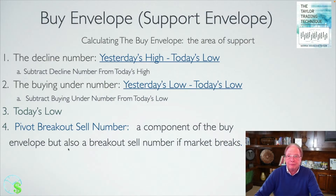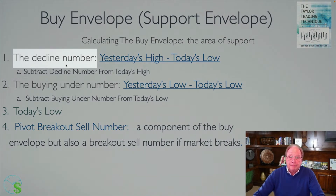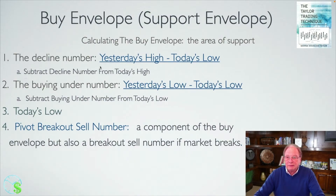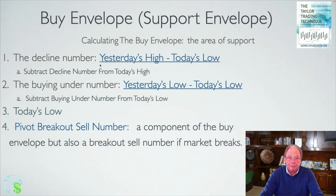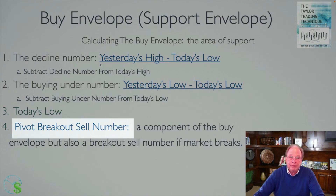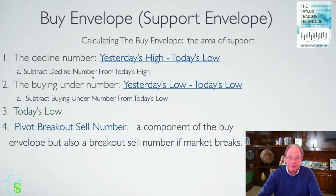So let's go into the buy envelope — the support envelope first. There are four numbers that comprise the buy envelope, where support is for the following day. The decline number is the first number in the buy envelope, and it's the difference between yesterday's high and today's low. We calculate this number and then subtract the decline number from today's high. Next is the buying under number, which is the difference between yesterday's low and today's low, and then we subtract that buying under number from today's low. The third number that goes into the buy envelope is today's low. And finally, the pivot breakout sell number, which is part of the buy envelope — but if we break out of that, that number becomes resistance.